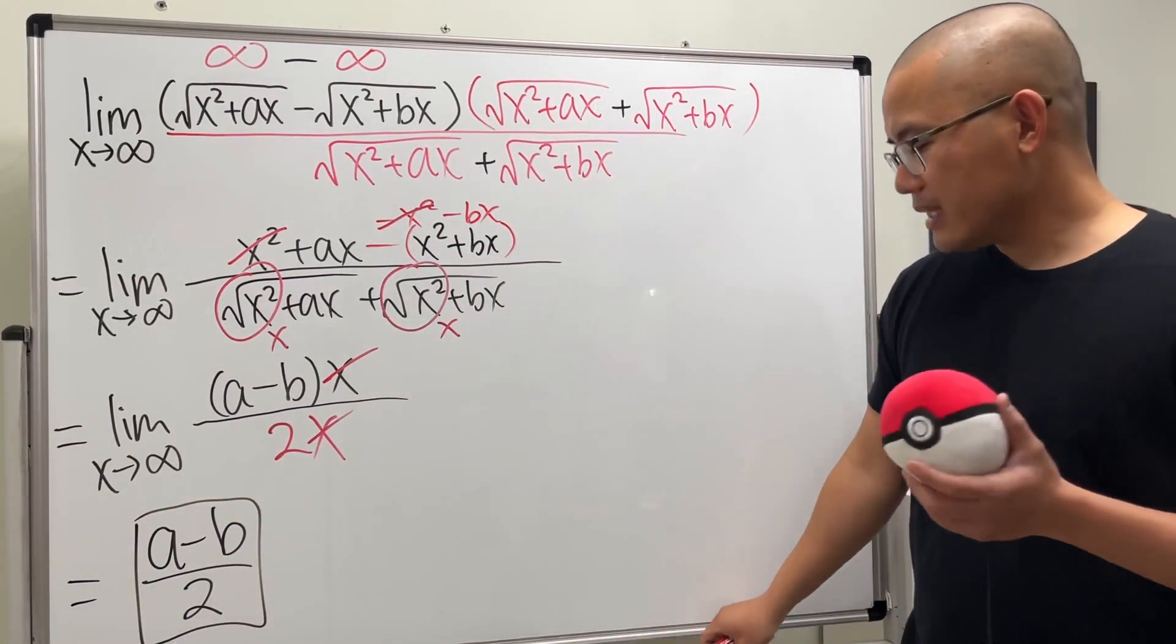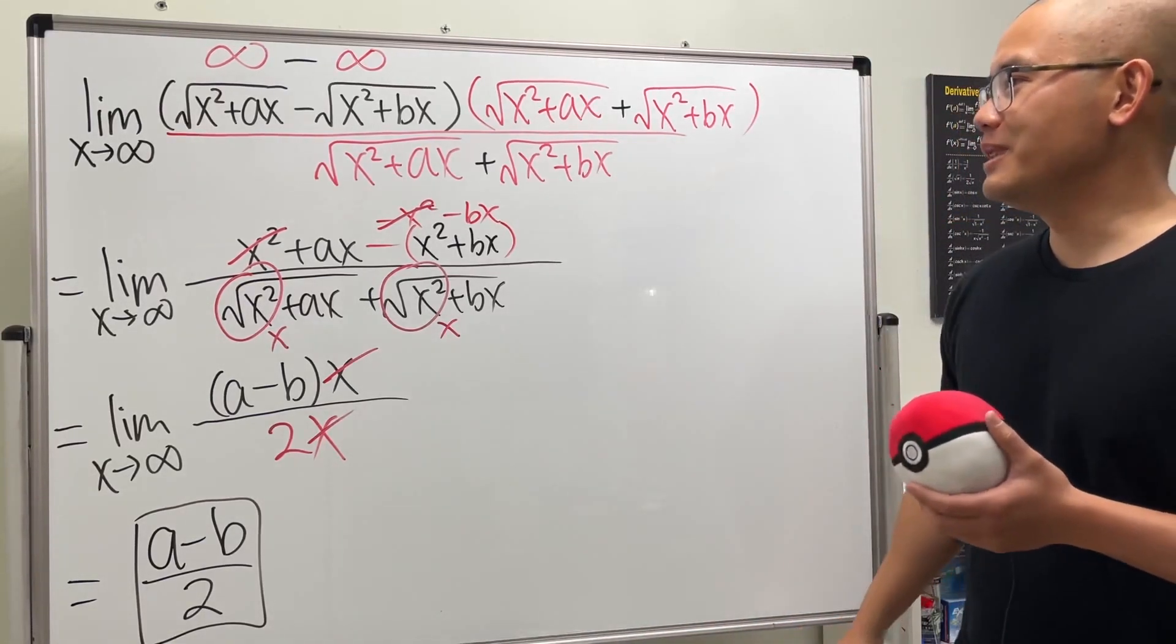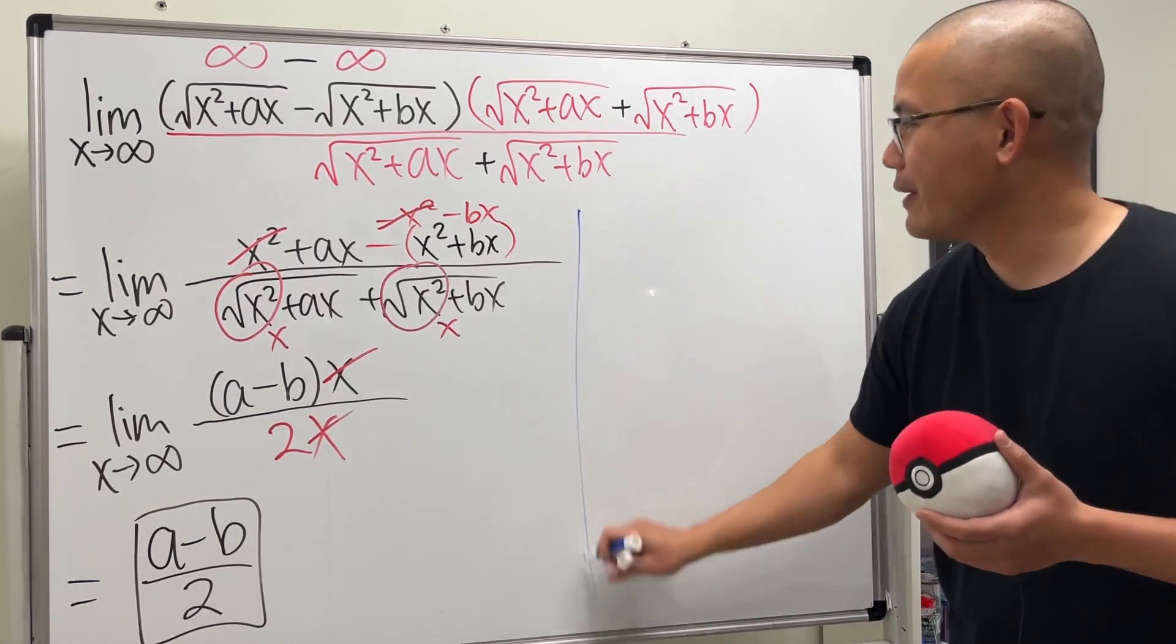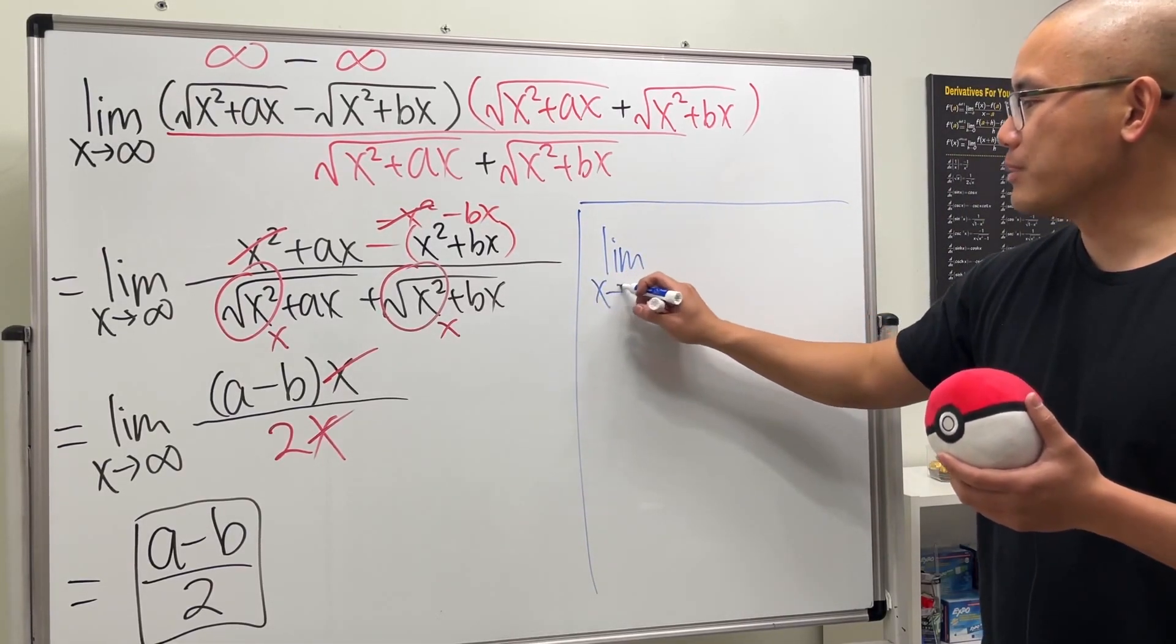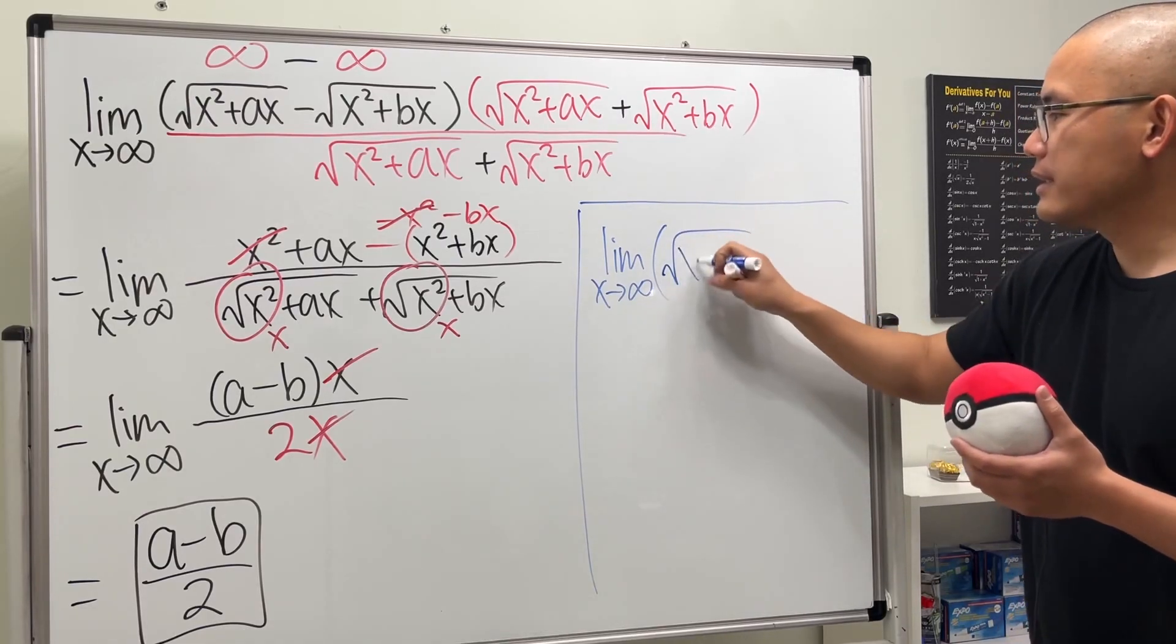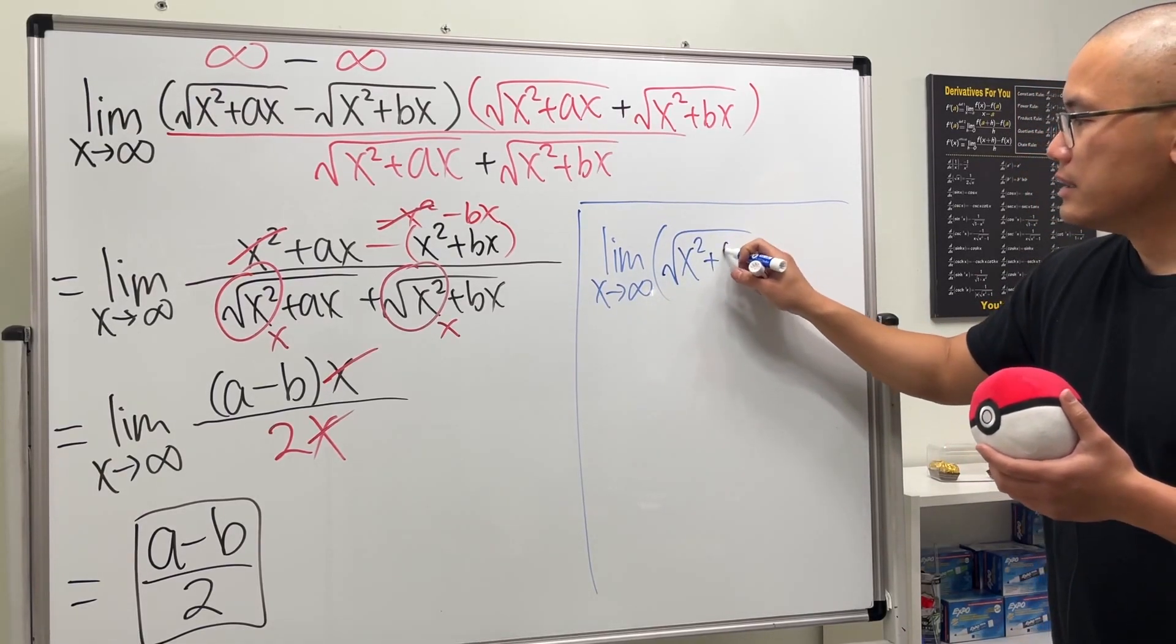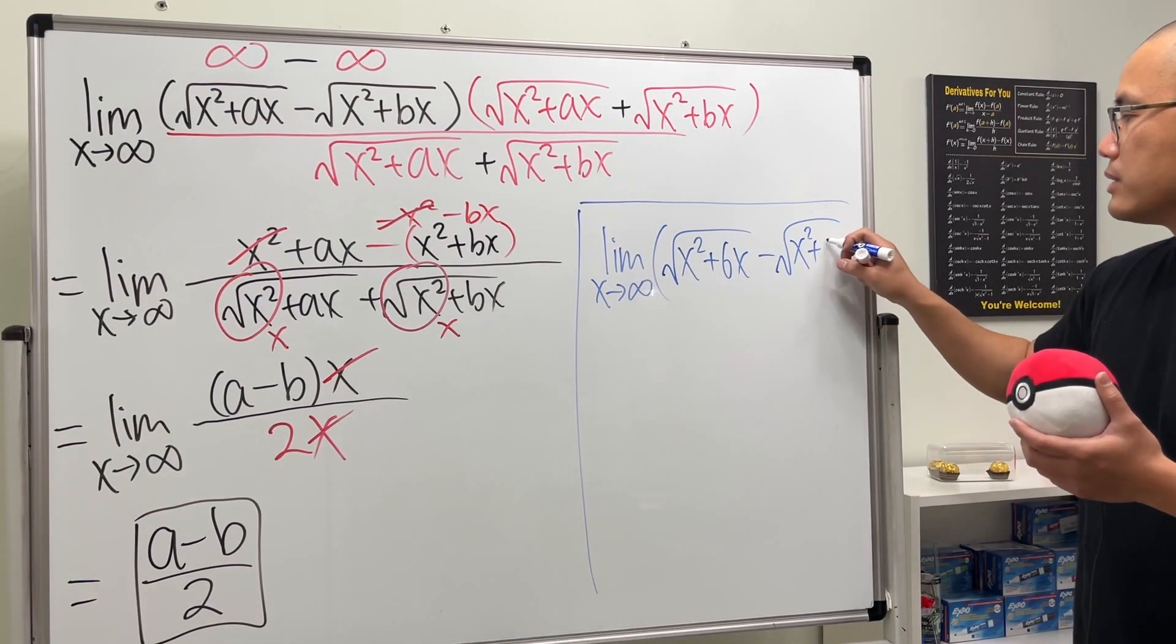And in fact, if you know this little formula you can do a lot of such limit questions with ease. For example, I can say things like what's the limit as x approaching infinity of square root of x squared plus 6x minus square root of x squared plus 2x.